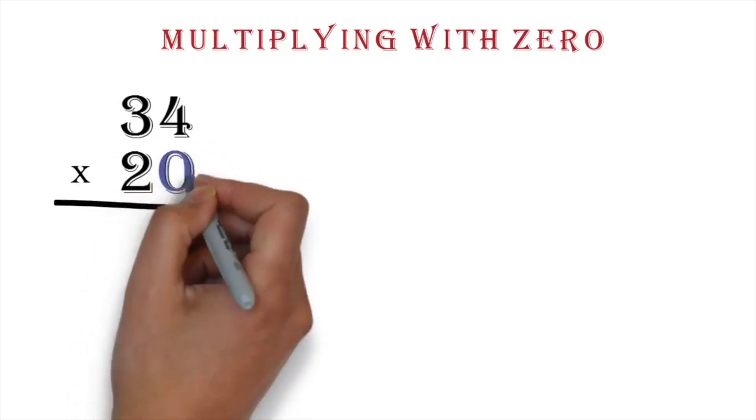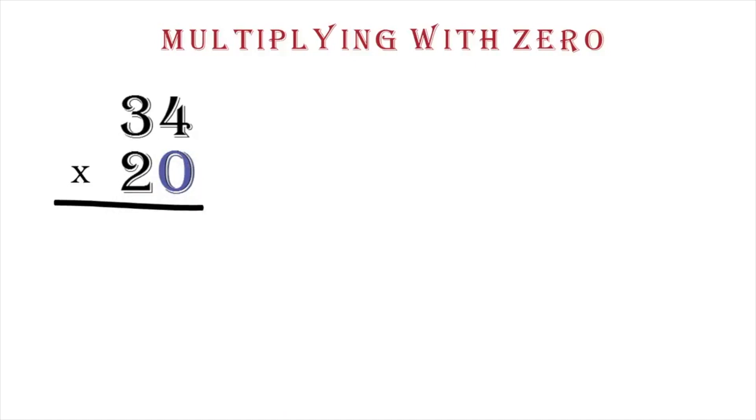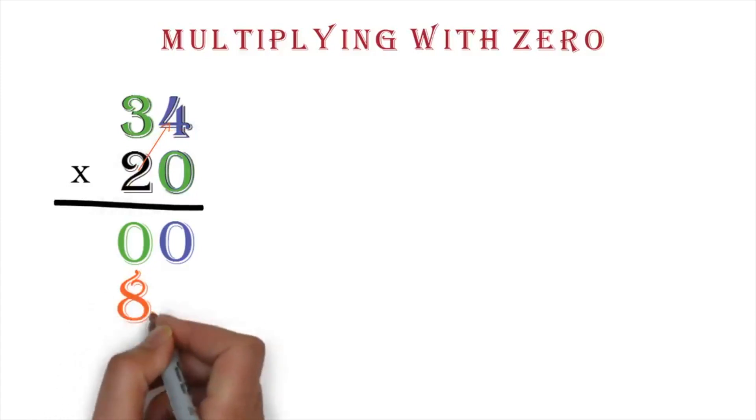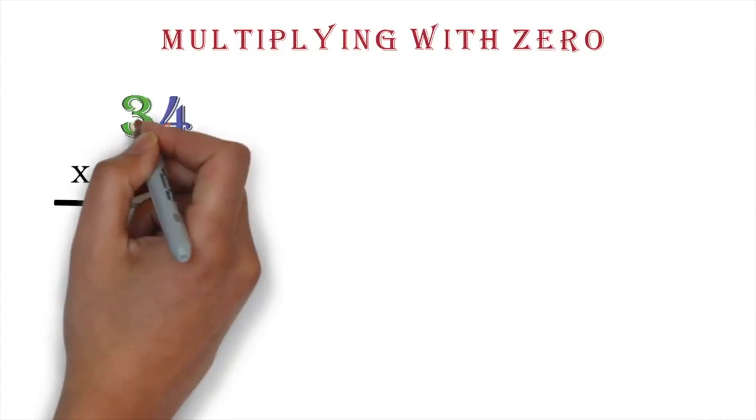Multiplying with zero. When multiplying by a number with zeros behind, like 20, it is not necessary to go through the normal multiplication method. Example, the normal way we will go about multiplying 34 by 20 is this. We first multiply by the zero. We know that any number by zero is zero. So, four times zero is zero. Three times zero is zero. Then we move to the two. Two times four is eight. Then, two times three is six.